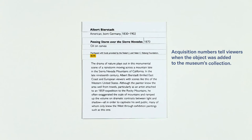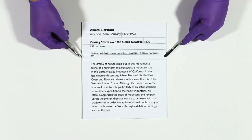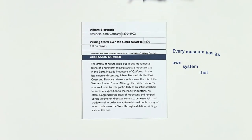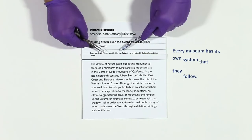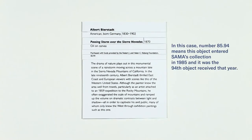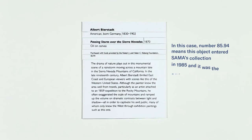Acquisition numbers tell viewers when the object was added to the museum's collection. Every museum has its own system that they follow. In this case, number 85.94 means this object entered Sama's collection in 1985, and it was the 94th object received that year.